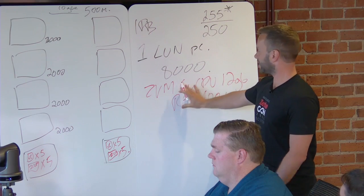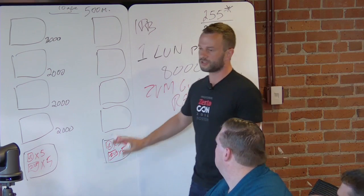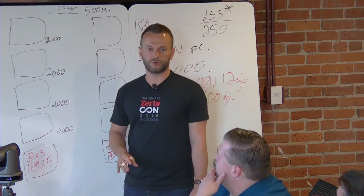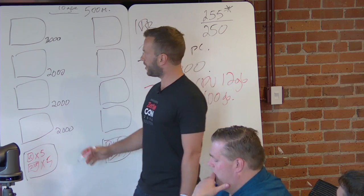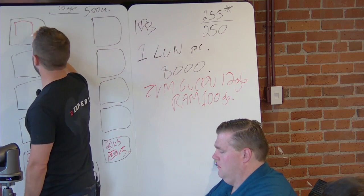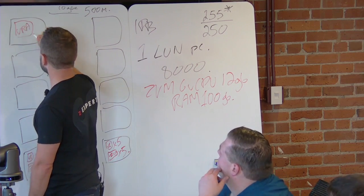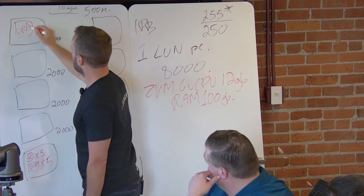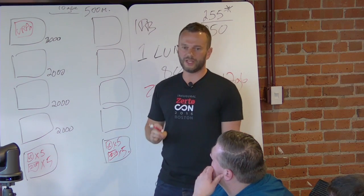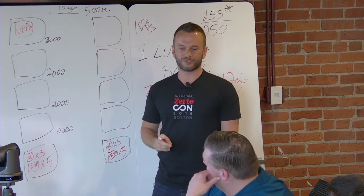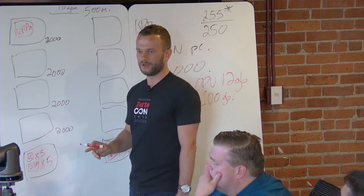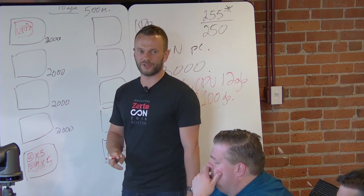The ZVMs must be sized according to the number of protected virtual machines. We have a sizing guide. In this environment, even though the ZVM is just a .NET service, we recommend it have its own SQL database. The ZVM spec is 6 vCPUs, 12 GB of RAM, and around 100 GB of disk space for logging and data.